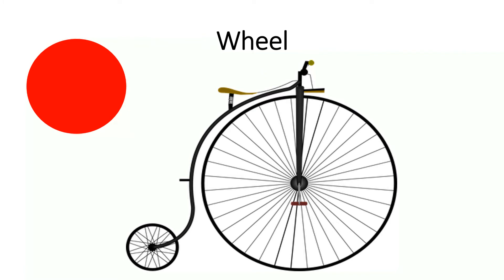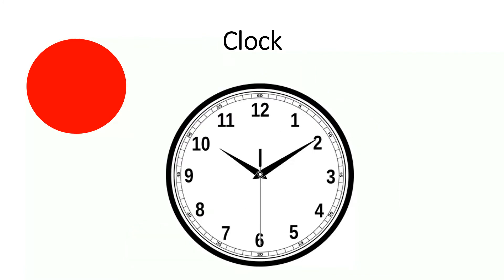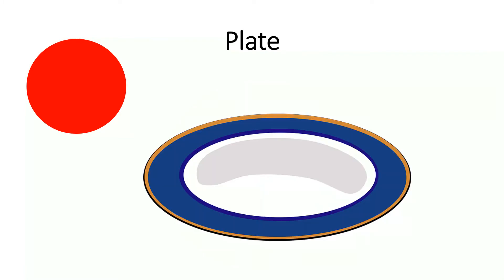The shape of a wheel is a circle. The shape of this clock is a circle. The shape of this plate is a circle.